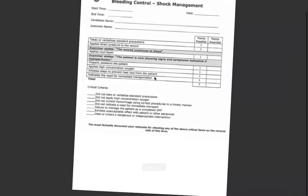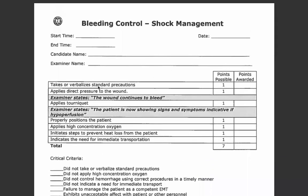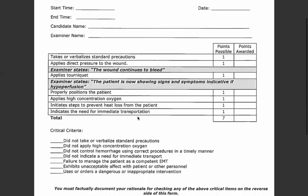Let's talk about the skill. You're going to start with standard precautions and scene safety. The proctor will indicate that the patient has a bleed — let's say it's on their forearm. You apply direct pressure using a sterile bandage. The examiner states the wound continues to bleed, so a tourniquet is now indicated. Grab your tourniquet and make sure to apply it correctly. Watch our video on the demonstration of the tourniquet to see how it's applied correctly.